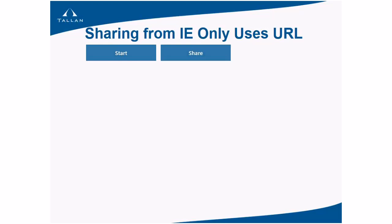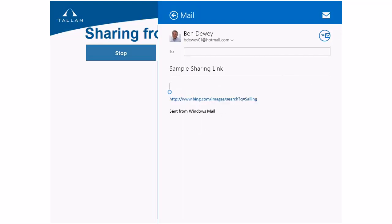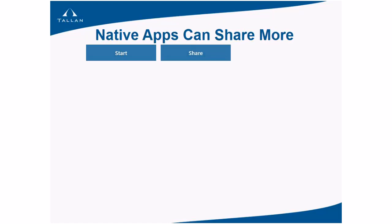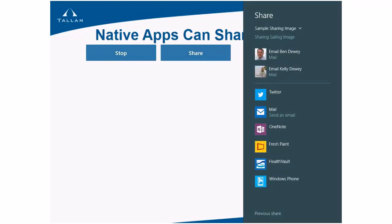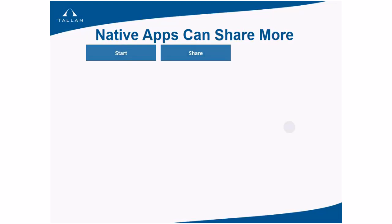For sharing, if you're in the Metro-style Internet Explorer on a website and use the share charm, you only get the current URL — for example, http://bing.com/images/search. With a native application, you can share whatever you want. Choosing share in the native app and clicking the mail app shows a full image being shared — not just a URL like in the browser case.